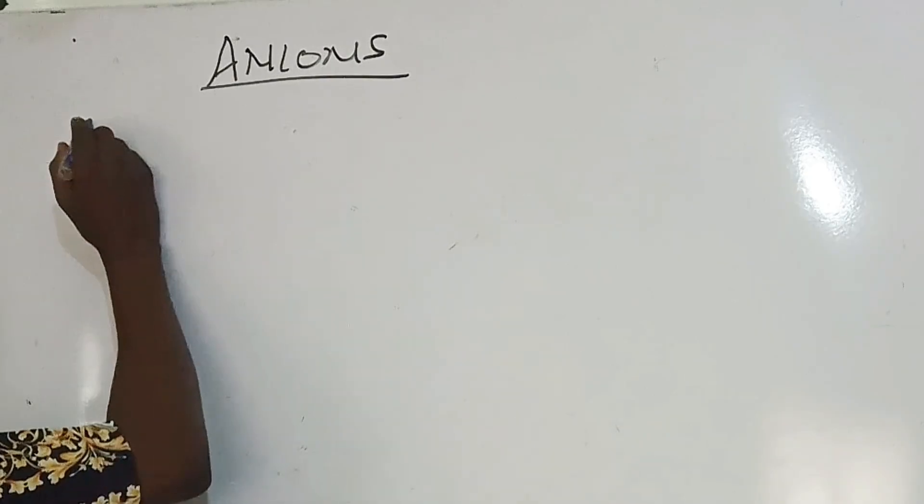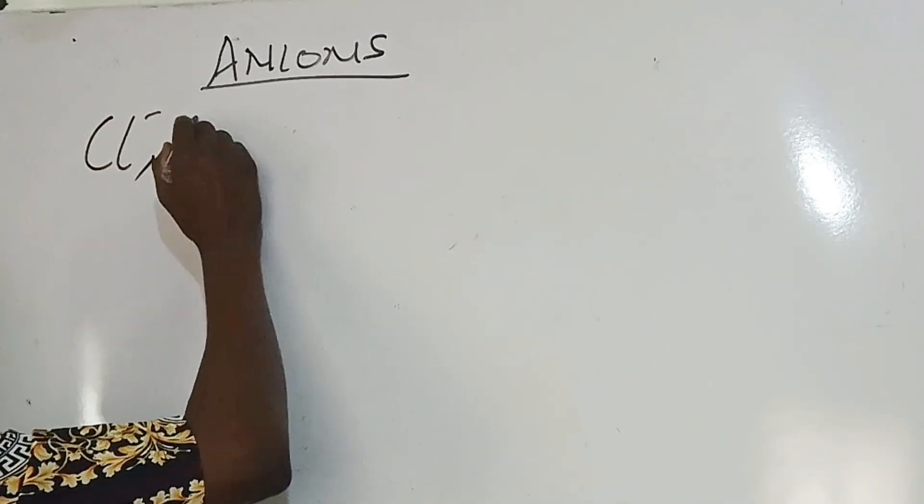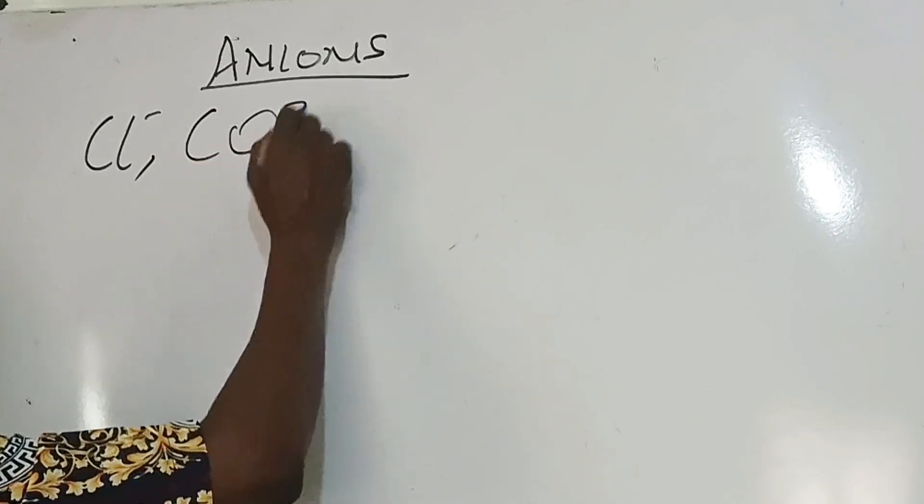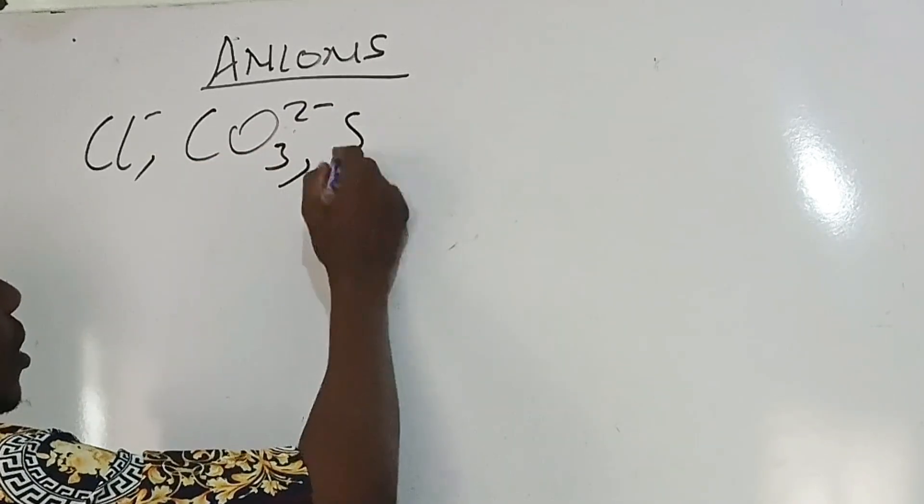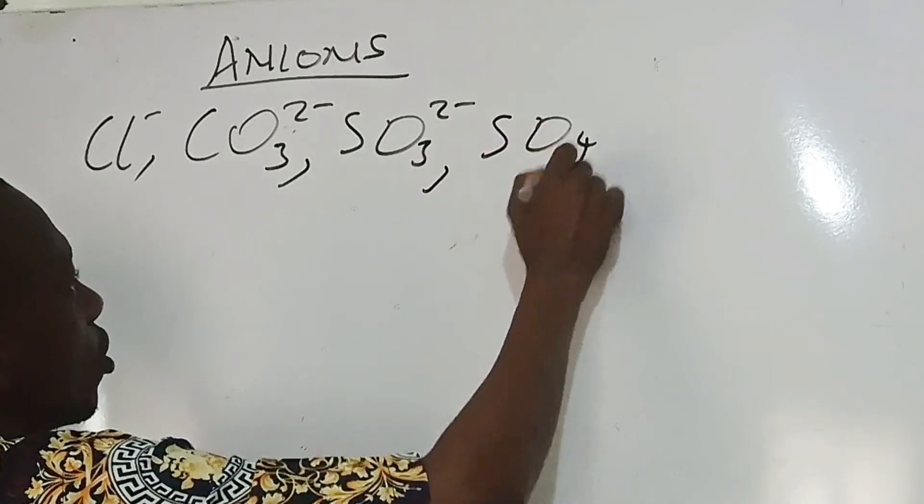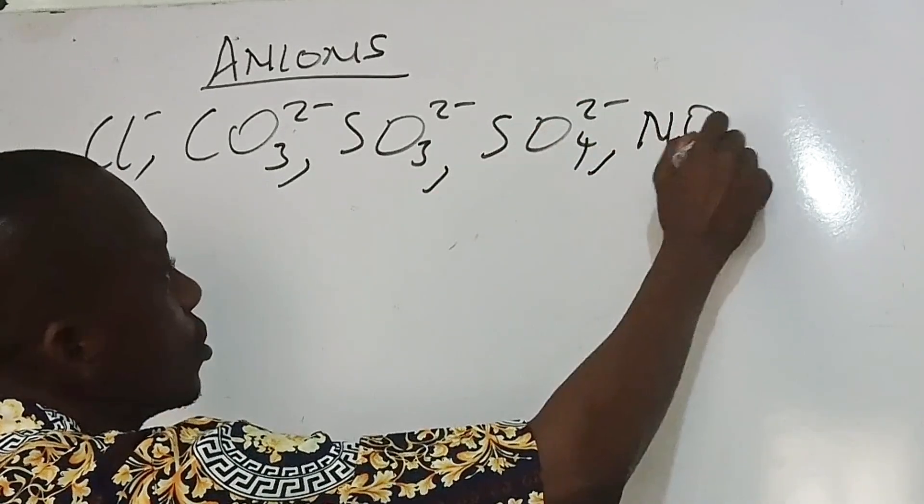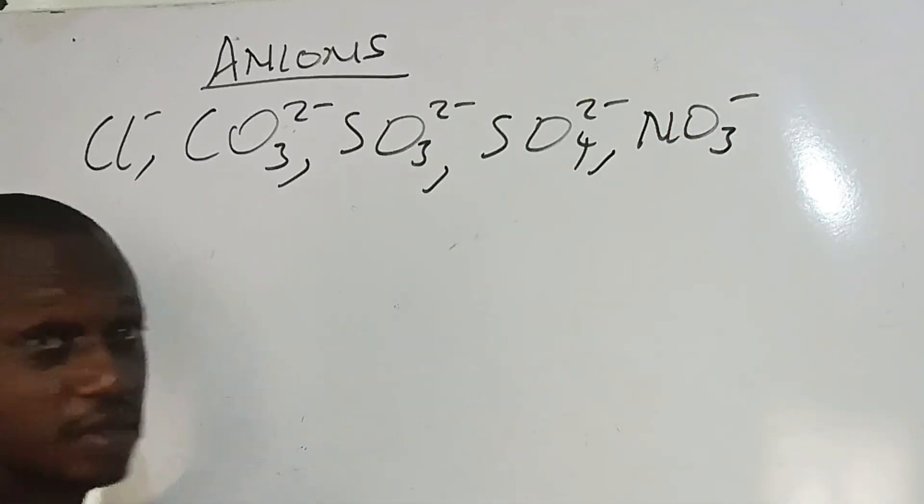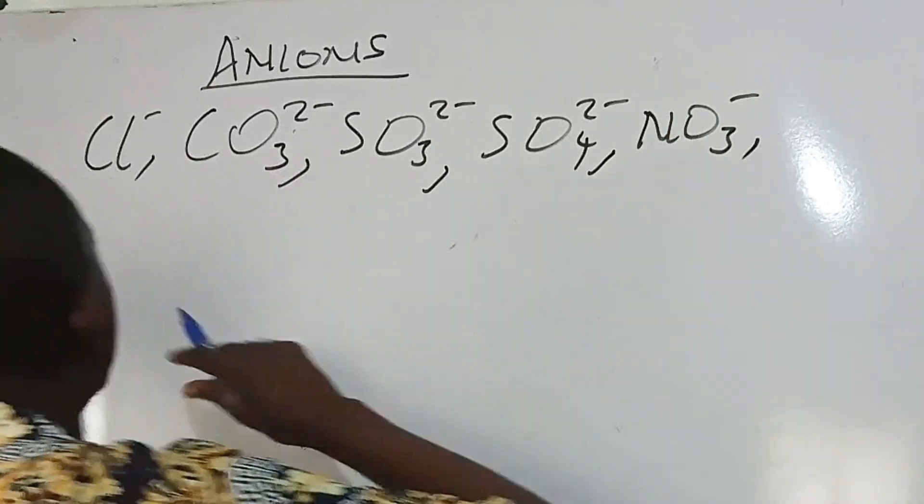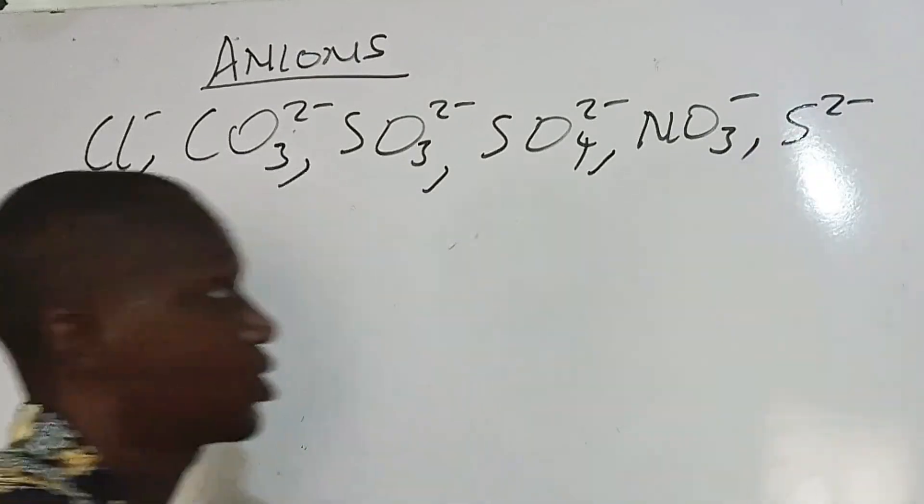There are some anions, major anions that are expected of you to know how to analyze. These are the lists: Cl⁻ (chloride), CO₃²⁻, SO₃²⁻, SO₄²⁻, NO₃⁻, and sometimes S²⁻.